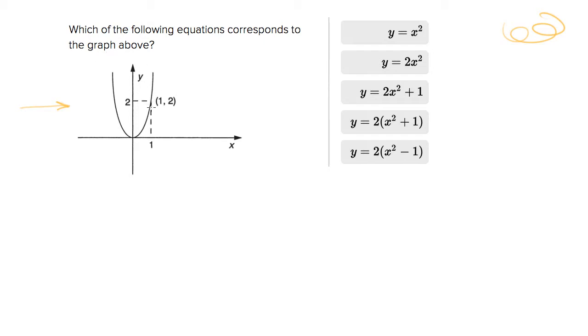All that you really need to know, which is all the information that is really contained on this graph, is that the origin is included, so the point (0,0) is in this function, and the point (1,2) is in the function. That's really all the information you get off of this picture.